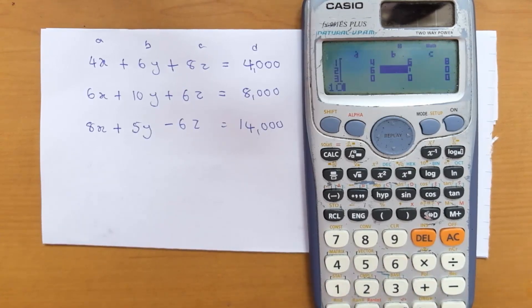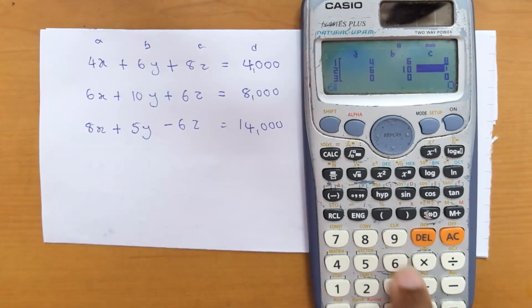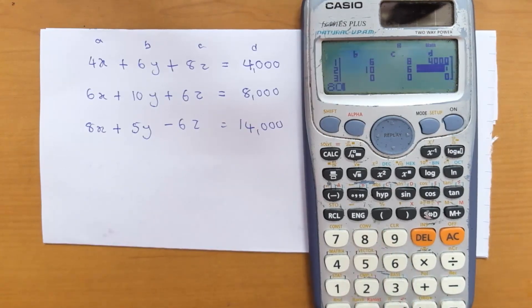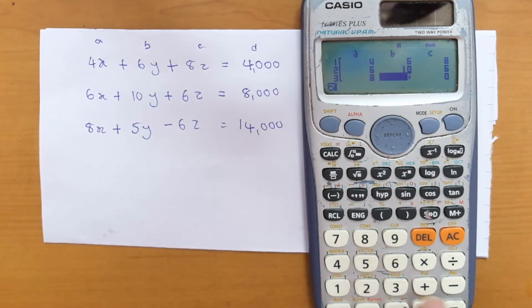Next one is negative 6. Negative 6 equals, 14000 equals. We have entered all the values.